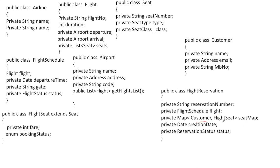We create a class FlightReservation with: a unique reservation number, an instance of FlightSchedule to identify which flight is being booked, the date, and a ReservationStatus enum indicating the current booking status. We also have a HashMap where the key is Customer and the value is FlightSeat, because for multiple passengers each customer is mapped to a specific seat booked in that reservation.